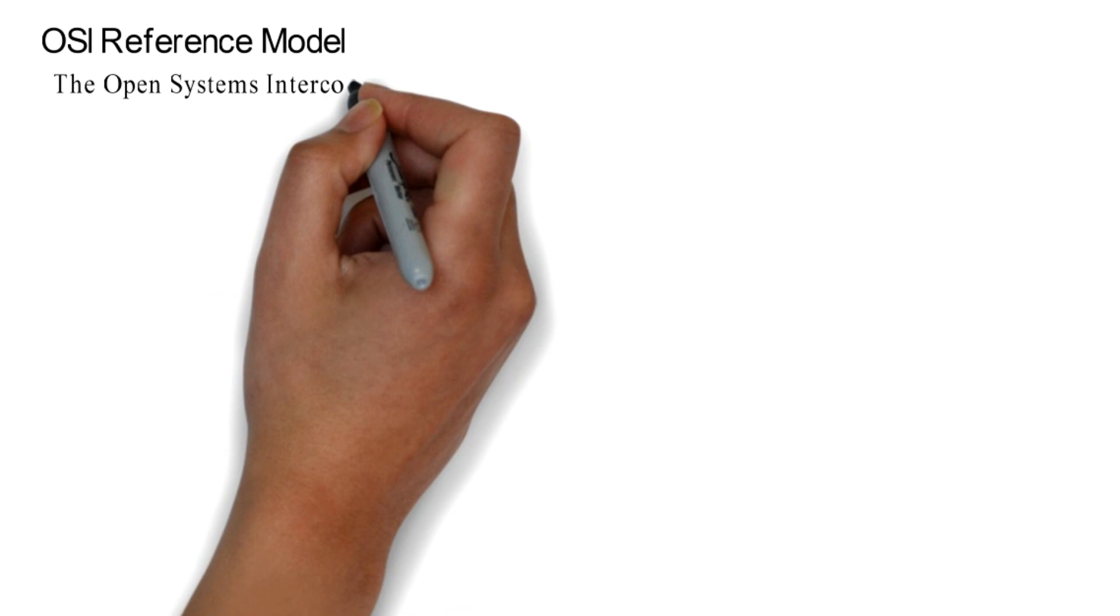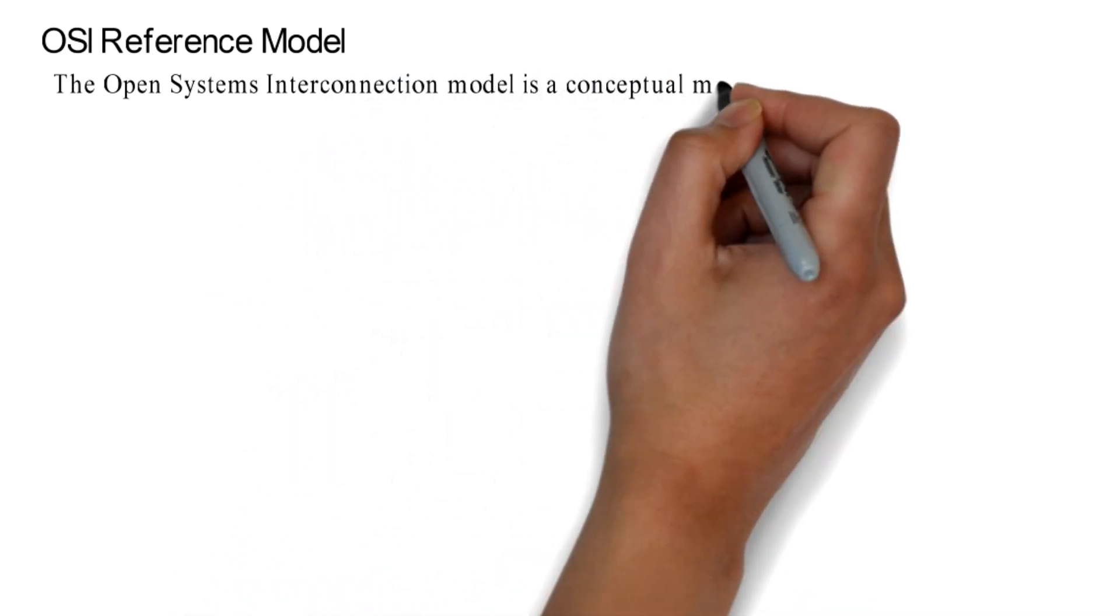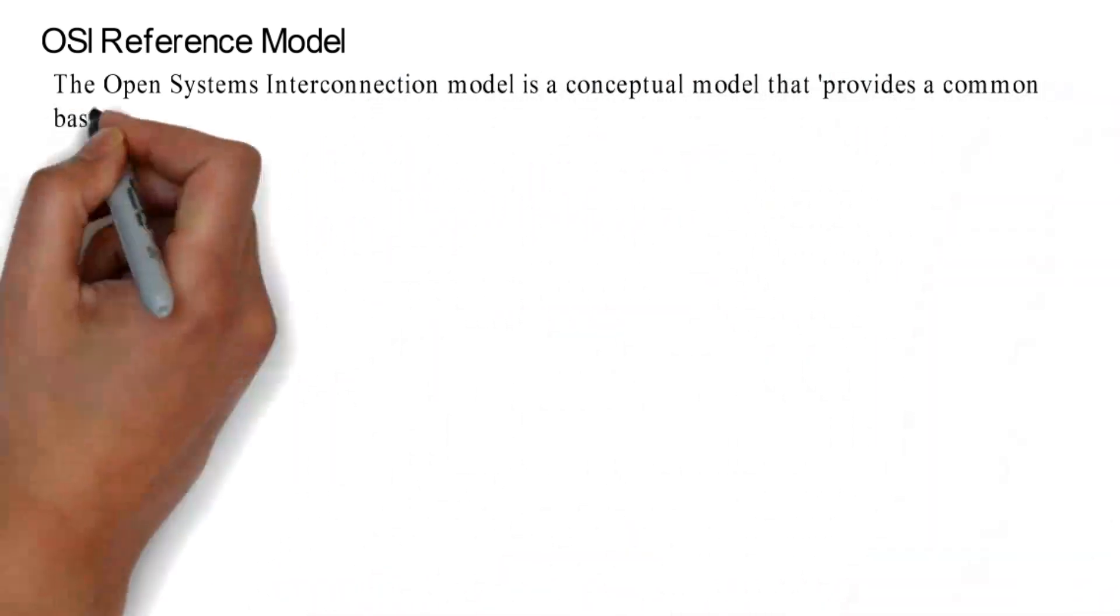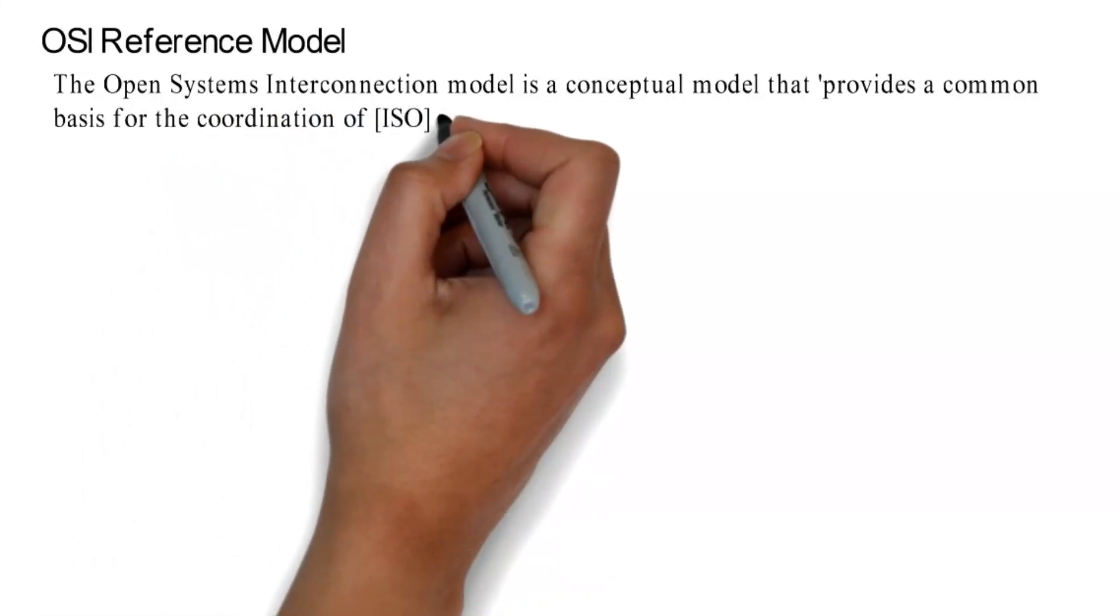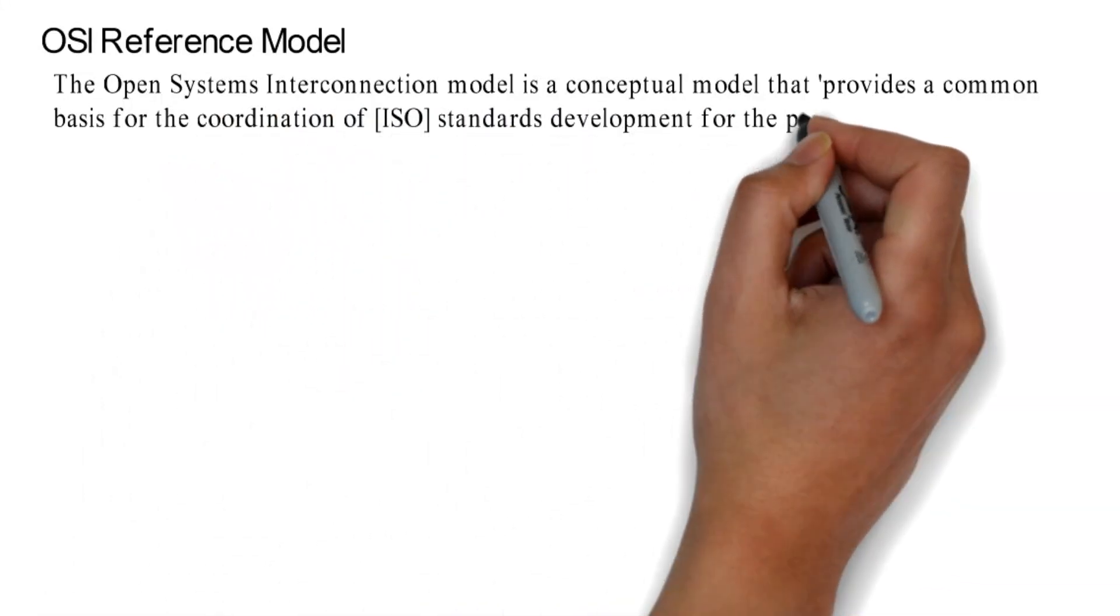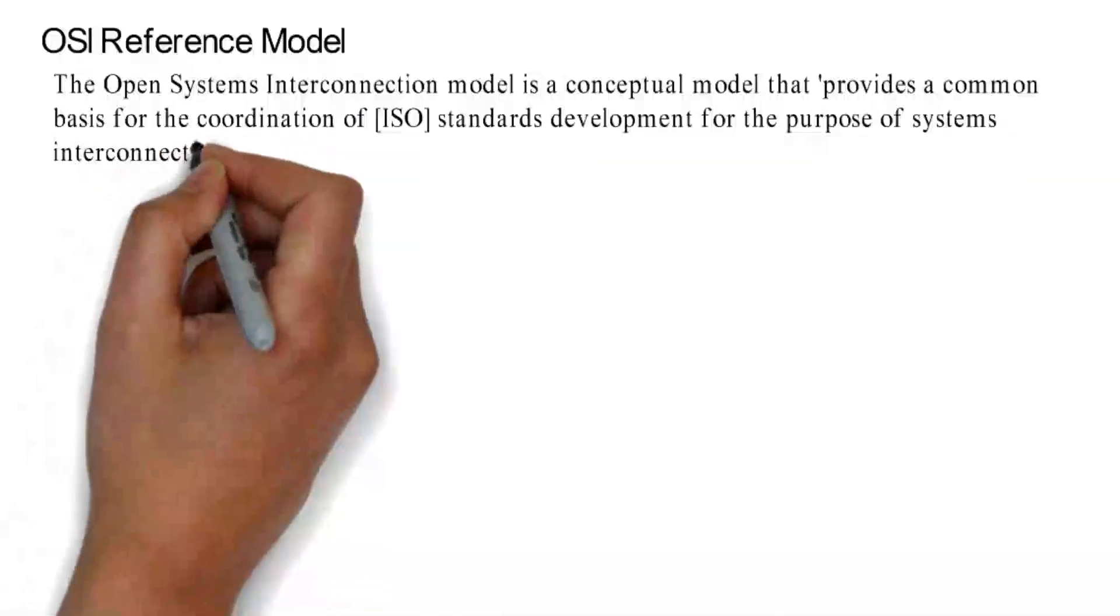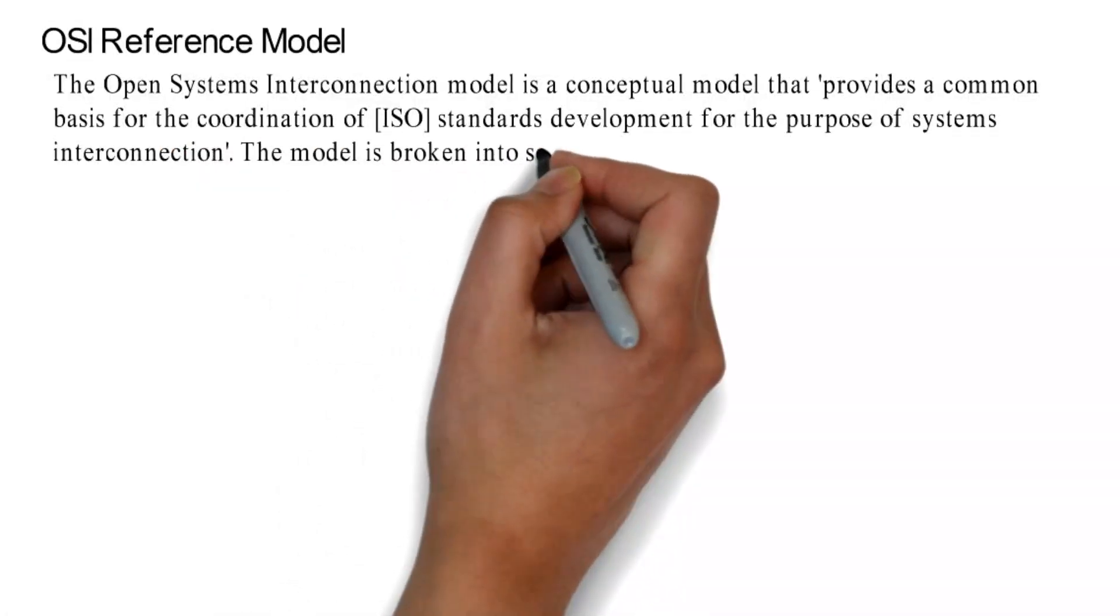OSI Reference Model. The Open Systems Interconnection Model is a conceptual model that provides a common basis for the coordination of ISO standards development for the purpose of systems interconnection.